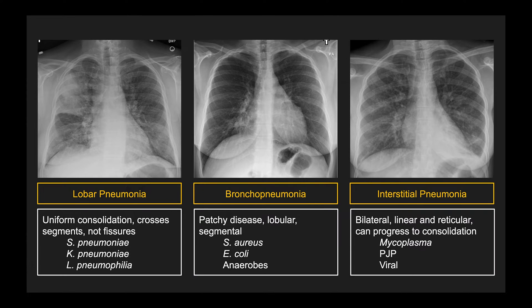When we talk about pneumonia on radiology, there are three different morphologies it can take on a chest radiograph. Lobar pneumonia, in which a whole lobe or large part of a lobe is completely consolidated. Bronchopneumonia, in which a smaller area of lung shows consolidation or ground glass opacity, usually patchy in distribution. And interstitial pneumonia, in which there is relatively uniform symmetric reticulation or linear opacity that can progress to consolidation.